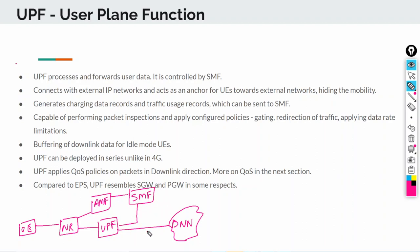This interface is called the N6, this is your N4, this is your N3, and this is your N2. And then you have the N11 interface. So now that we have this picture, let's go through these bullet points. The UE sends all the traffic to the NR and the NR sends that traffic to the UPF.